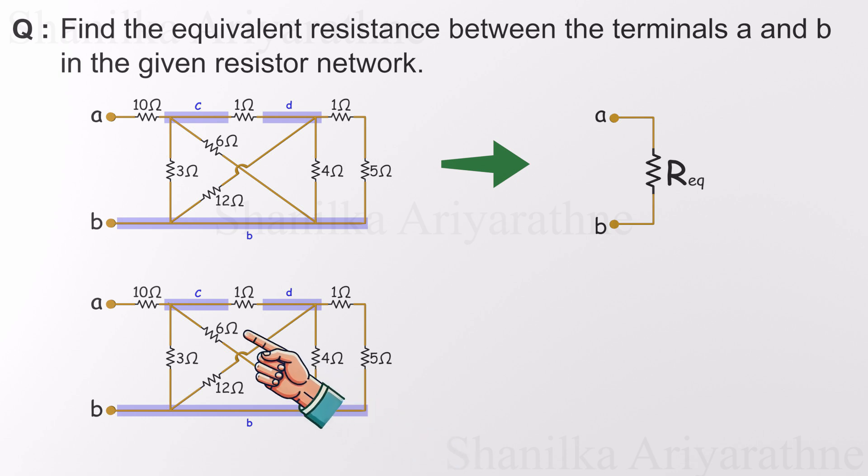Take a close look at this 6 ohm resistor. It appears to cross over the 12 ohm one, creating the illusion of complexity. But in reality, it's simply connected between nodes B and C. That's all. So if we unplug it and redraw it like this, still keeping it between B and C, we haven't changed the circuit's electrical behavior at all. We've just tidied up the visual mess.